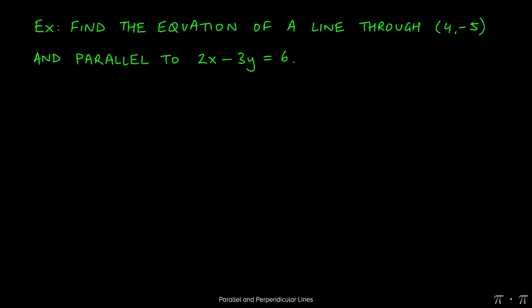In order to find the equation of any straight line, we always need two basic pieces of information. We need a point that the line passes through, and we need to know the slope of this new line.